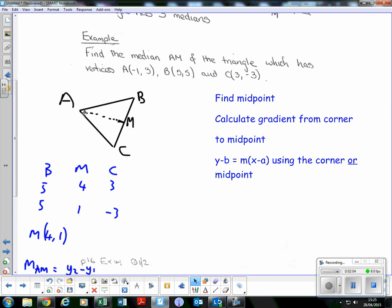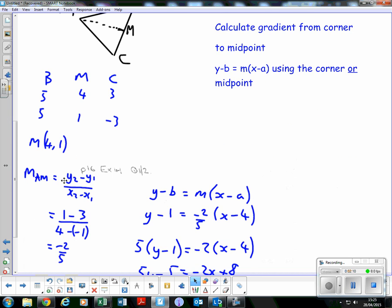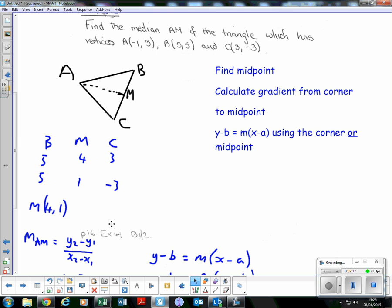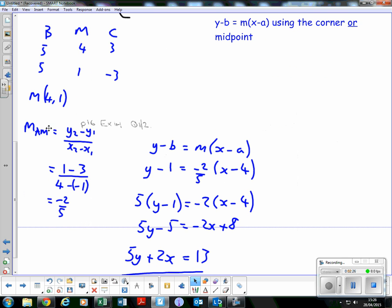Now, finding the equation of the median is just finding the equation of a straight line. We have two points, so find the gradient by substituting into (y₂ - y₁) / (x₂ - x₁). We're using points A and M because we're finding the equation of AM. B and C we don't need anymore. Substituting in, it comes to -2/5.